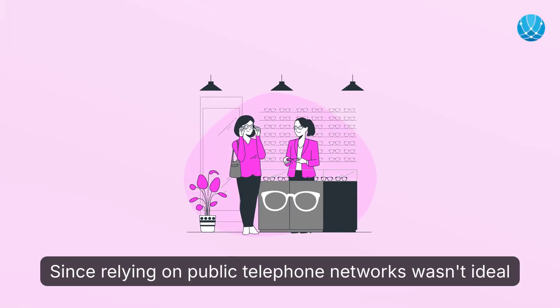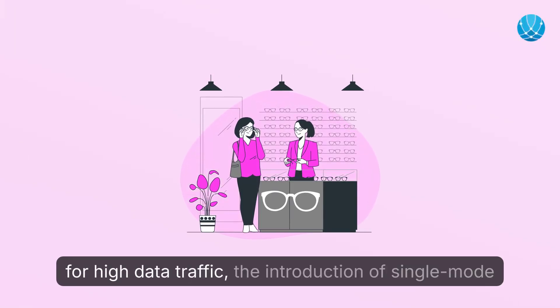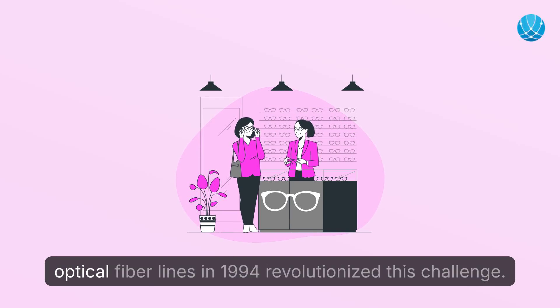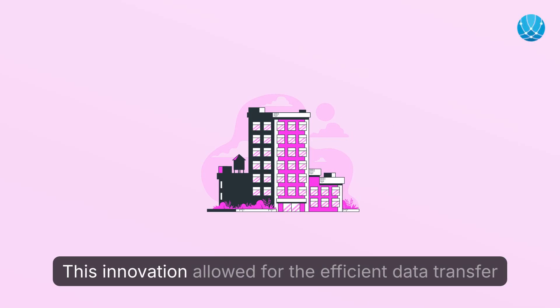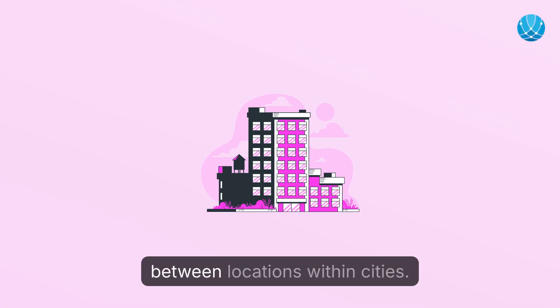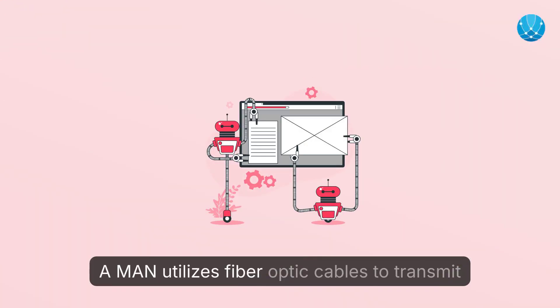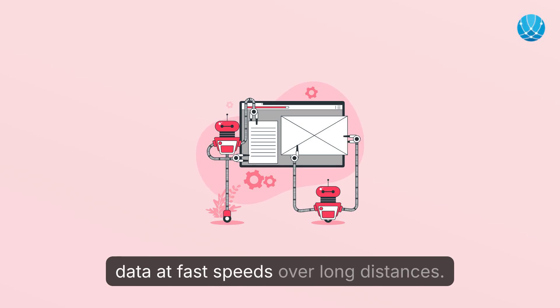Relying on public telephone networks wasn't ideal for high data traffic. The introduction of single-mode optical fiber lines in 1994 revolutionized this challenge, allowing for efficient data transfer between locations within cities. A MAN utilizes fiber optic cables to transmit data at fast speeds over long distances.